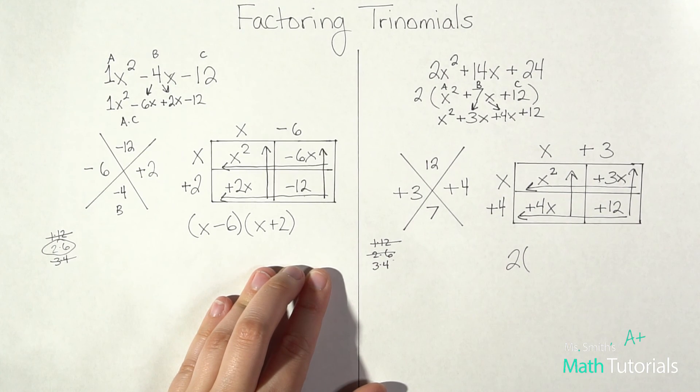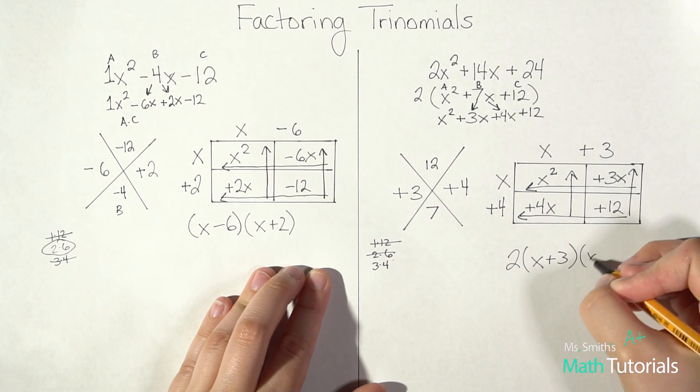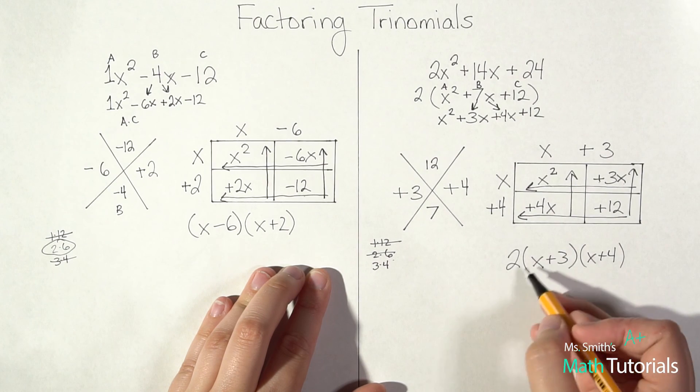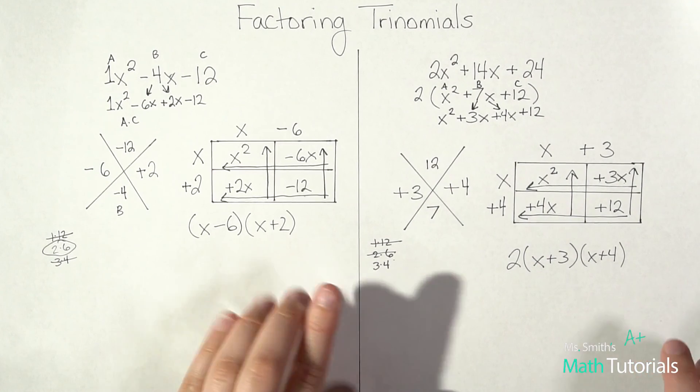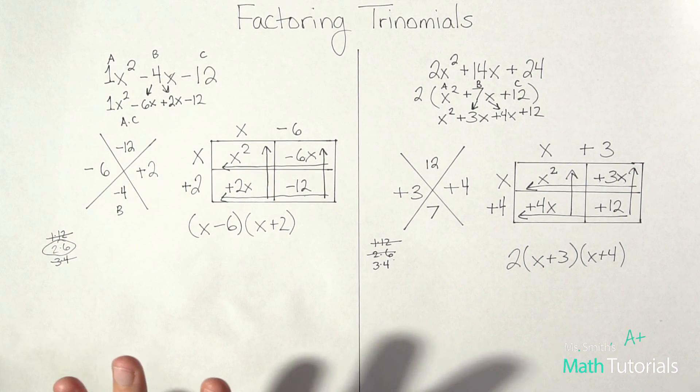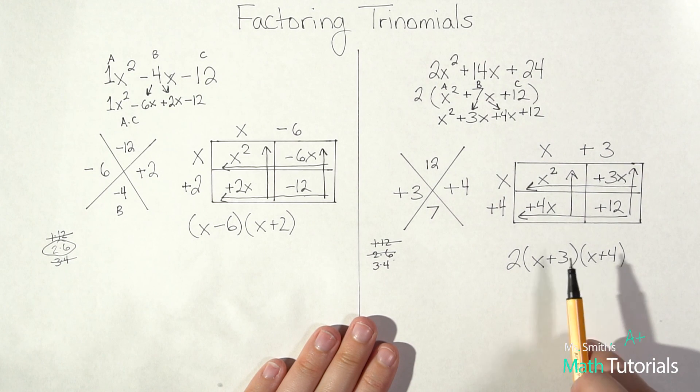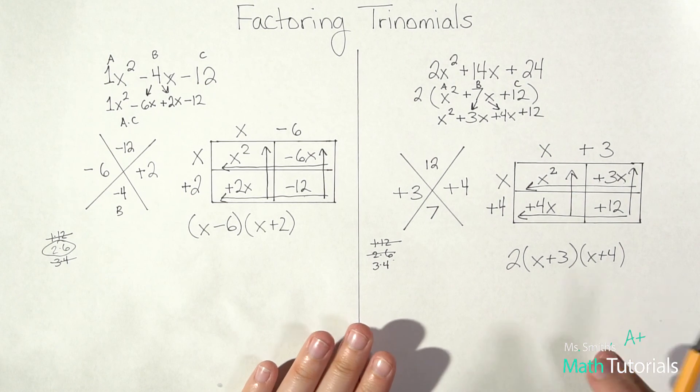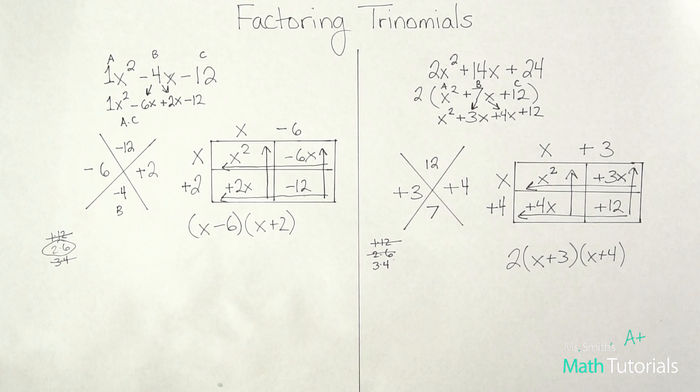So now I just need to write my answer. I've got x plus 3 and x plus 4. And I'm not going to forget that that 2 is part of my answer. That was my GCF I pulled out right at the beginning. Another question I do commonly get is, what if I put x plus 4 and then x plus 3? Does order matter here? It does not. And the reason why is because this is saying x plus 3 times x plus 4. And if you remember, when we multiply, order doesn't matter. 2 times 3 is 6. 3 times 2 is 6. Order does not change the answer.